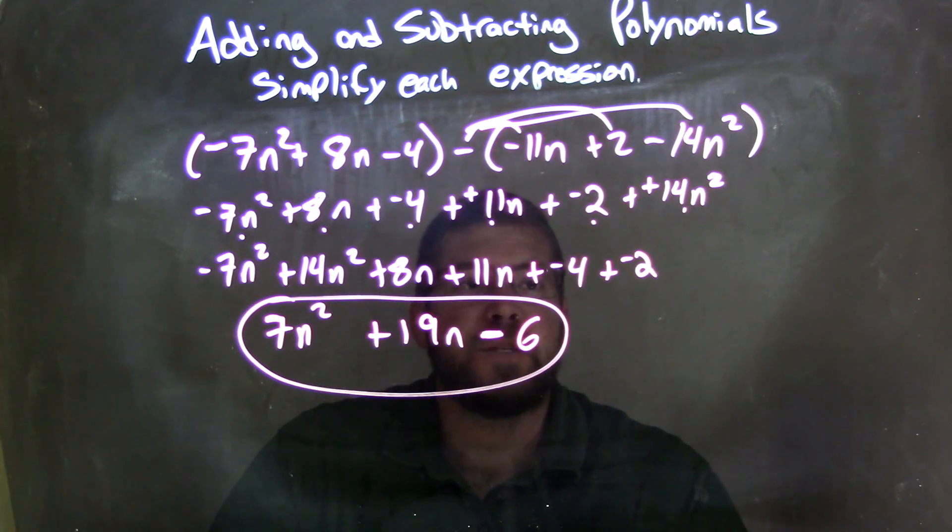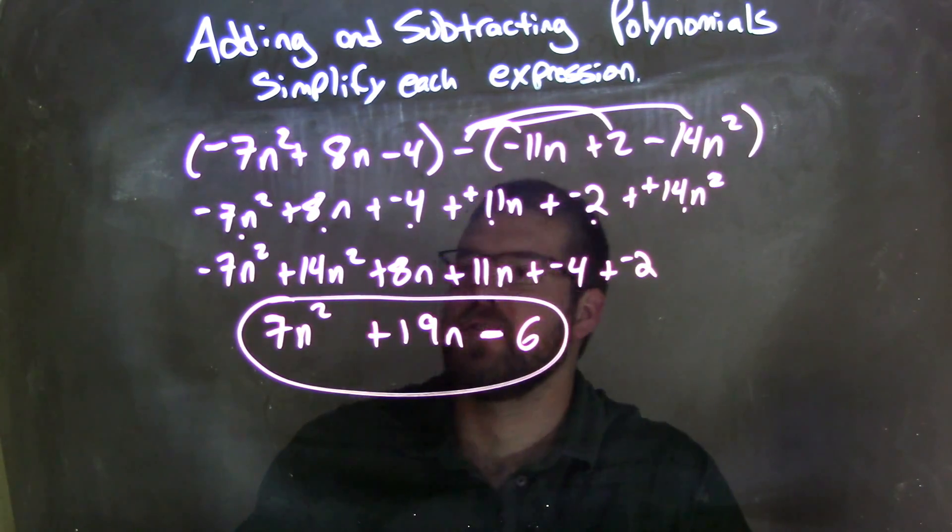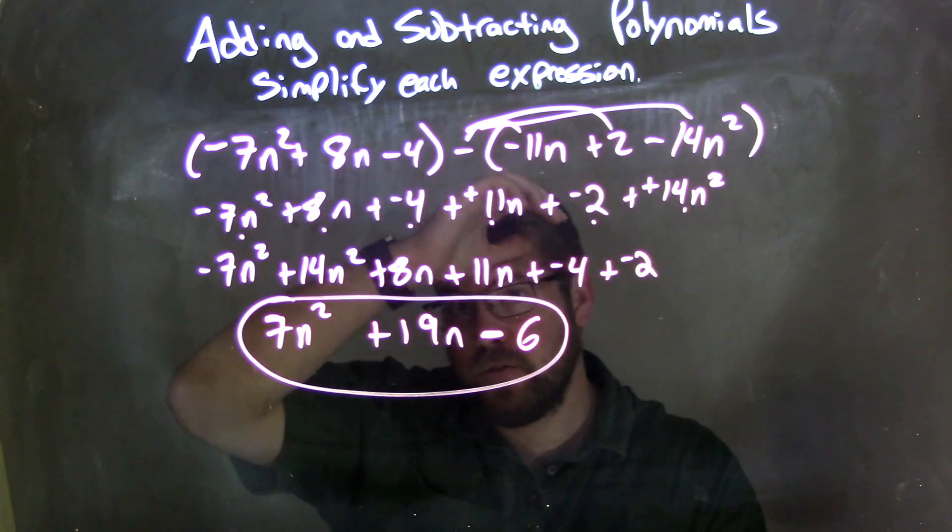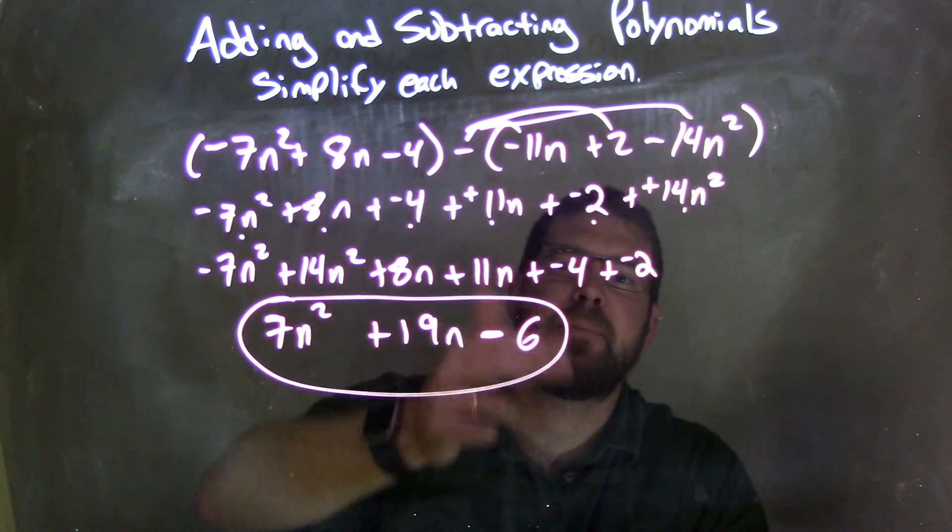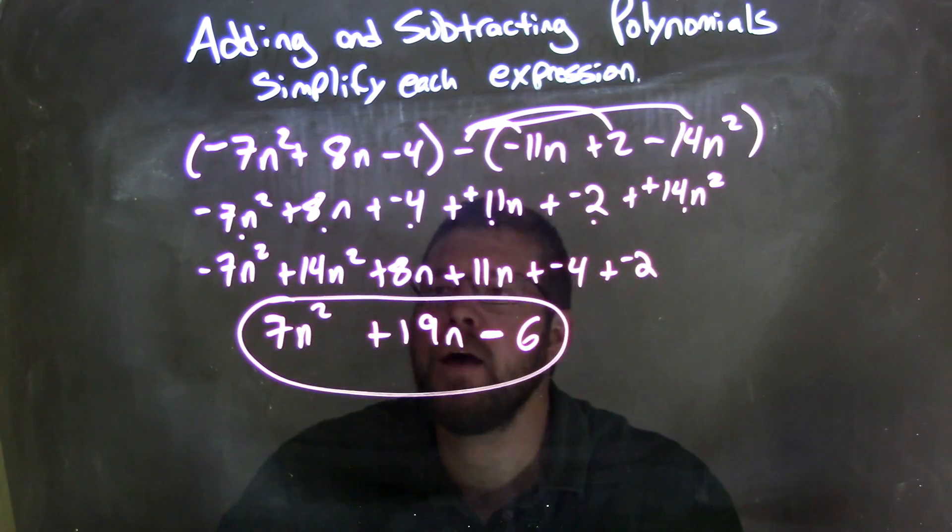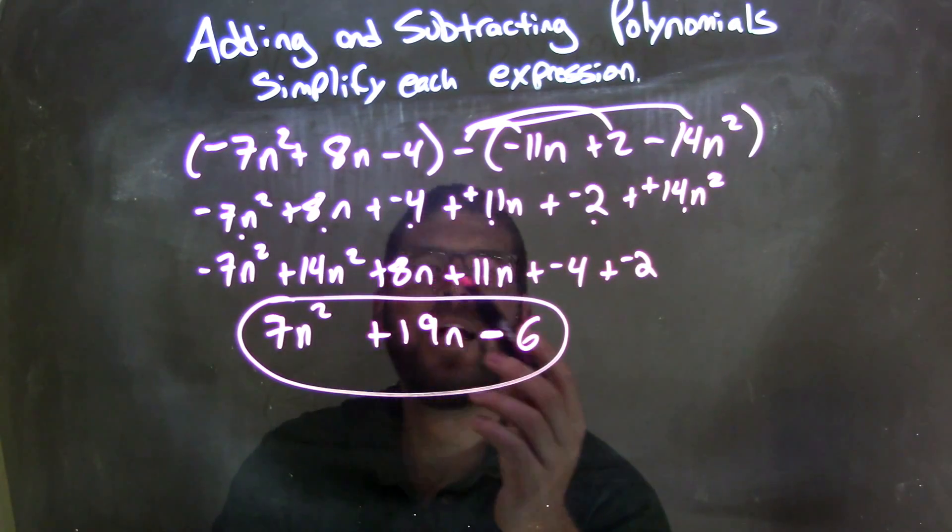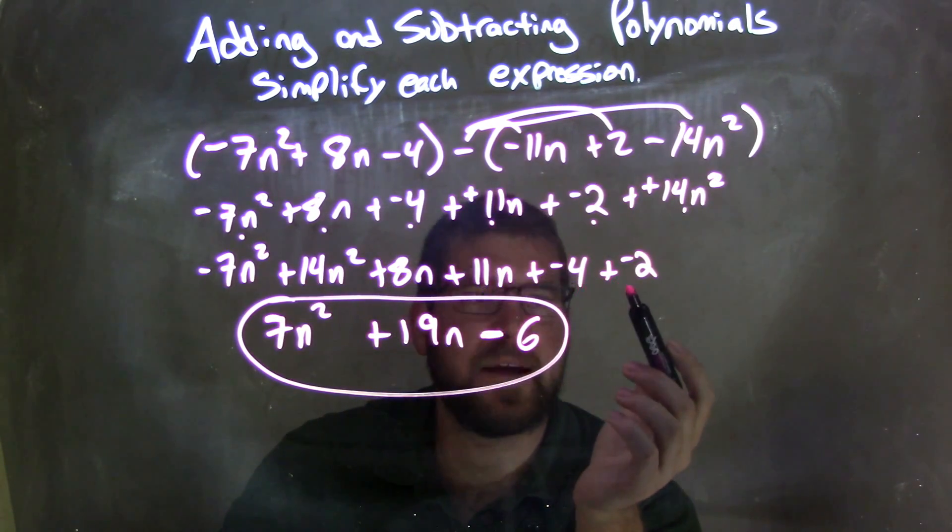Then I rearranged my like terms together with my highest degrees first, and I used a dot method as well as triple-checked, making sure everything went back down, which it did. And I got negative 7n squared plus 14n squared plus 8n plus 11n plus negative 4 plus a negative 2.